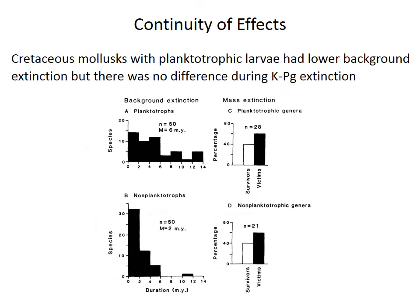However, mass extinctions do often differ in their effects on the biota. For example, Cretaceous molluscs with planktotrophic larvae were much less likely to go extinct during background times — averaging 6 million years duration versus 2 million years for non-planktotrophs — because they have bigger geographic ranges and greater larval dispersal increases gene flow and reduces the chance of speciation. But during the end-Cretaceous extinction, larval type didn't matter at all: about 60% of planktotrophic taxa went extinct, and also about 60% of non-planktotrophic taxa went extinct. So what was important during the background is no longer important during the mass extinction.